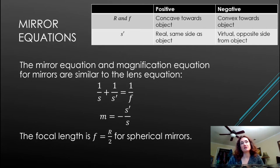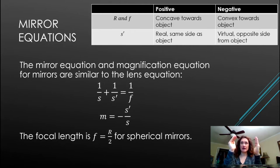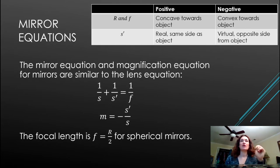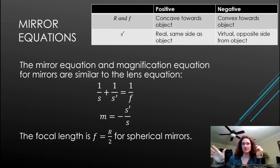The radius of curvature r and focal length f are positive if the mirror is concave towards the object, and negative if it's convex towards the object. So if the mirror curves away from the object, r and f are positive; if it bulges towards the object, r and f are negative. The image distance s′ is positive for a real image if it's on the same side as the object.